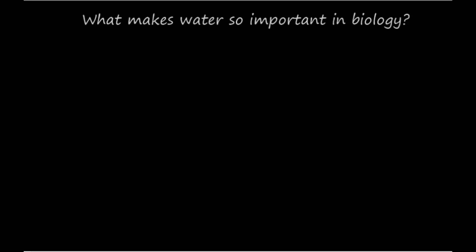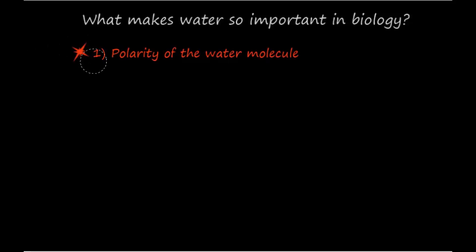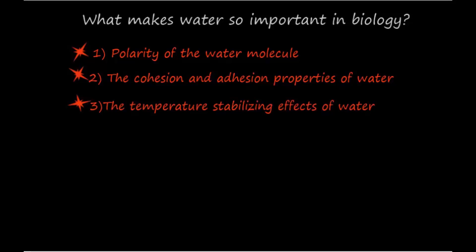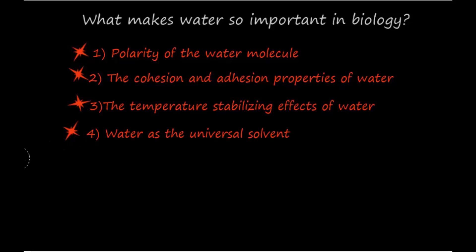I'll list the important biological properties, then review each of them in brief detail. These properties include polarity of the water molecule, the cohesion and adhesion properties of water, the temperature stabilizing effects of water, and water as the universal solvent.